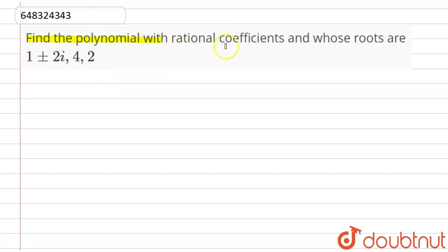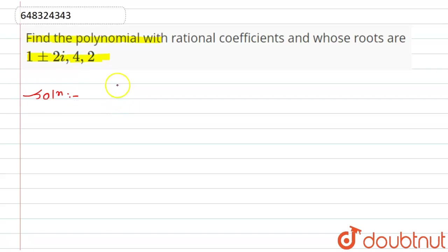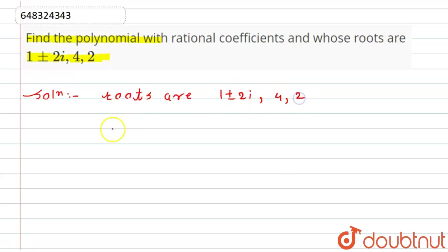Hello students. The question is: find the polynomial with rational coefficients whose roots are 1 plus or minus 2 times iota, 4, and 2. So for this, let's see the solution. We simply have to find the polynomial whose roots are given as 1 plus or minus 2 iota, 4, and 2.